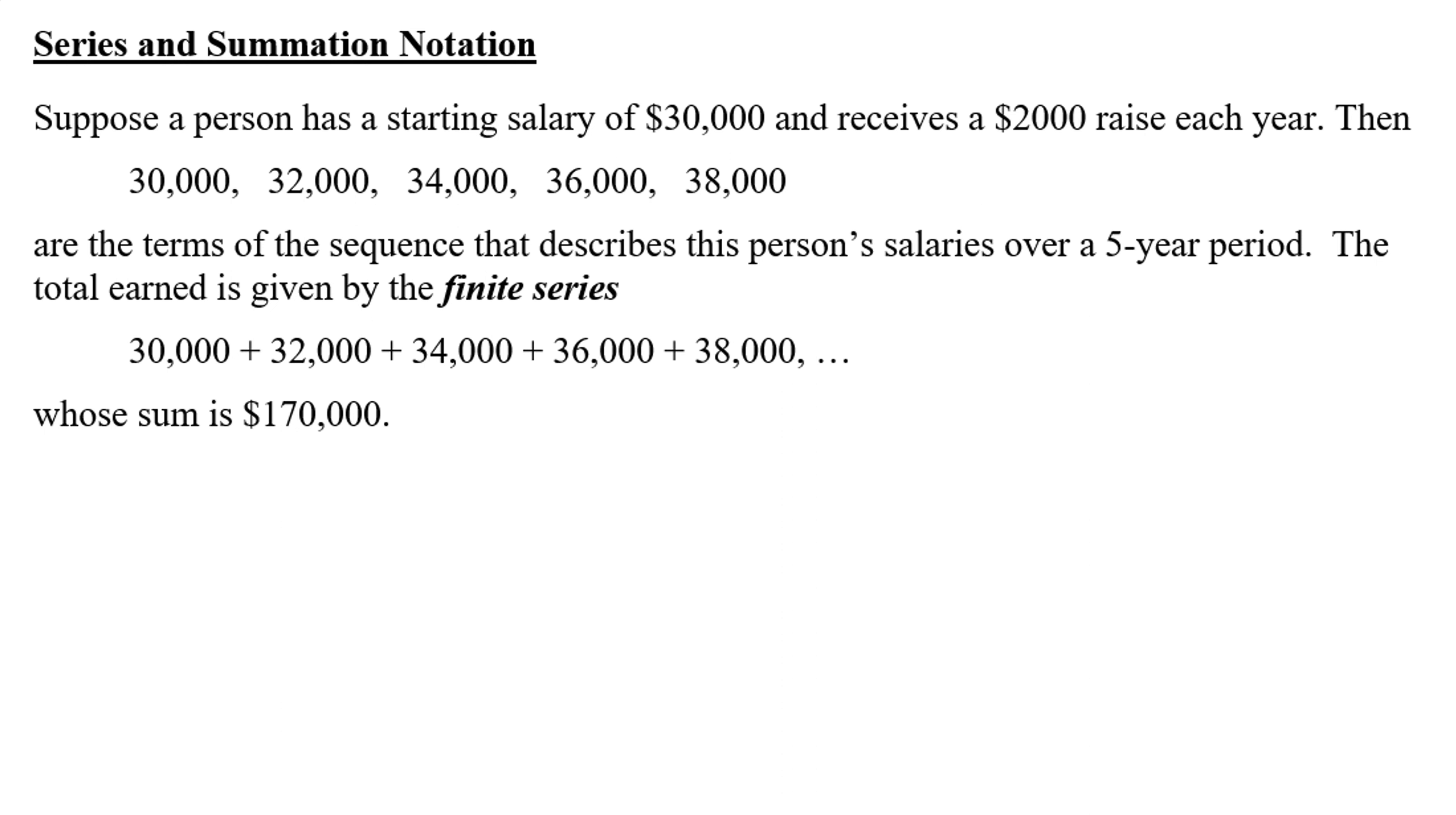About series and summation notation. Suppose a person has a starting salary of $30,000 and receives a $2,000 raise each year. Then the sequence of their pay for five years would be $30,000, $32,000, $34,000, $36,000, $38,000 - these are the terms of their sequence over that five-year period.